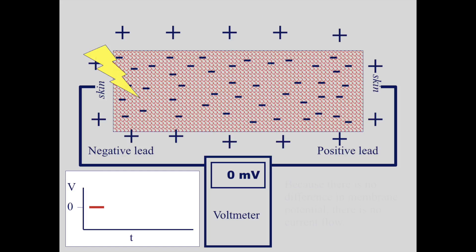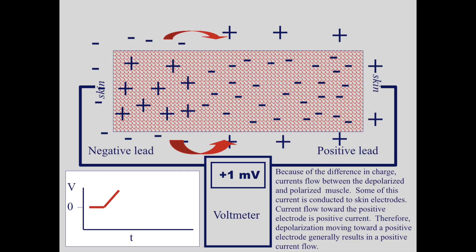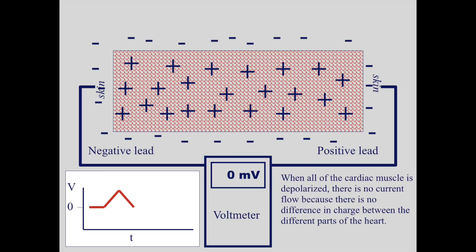When electrical stimulus occurs in the heart muscle, it begins to depolarize. Because of the difference in charge, currents flow between the depolarized and polarized muscle. Some of this current is conducted to the skin electrodes. Depolarization moving towards a positive electrode generally results in a positive current flow. Once all of the cardiac muscle is depolarized, there is again no difference in the membrane potential, so the reading goes back to zero.